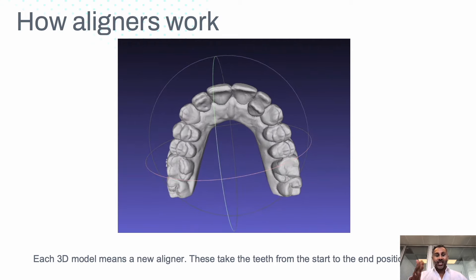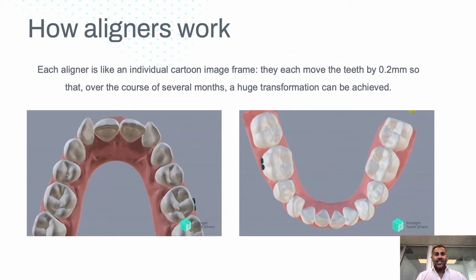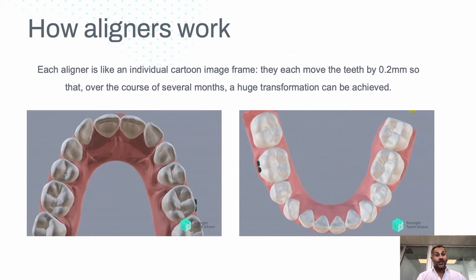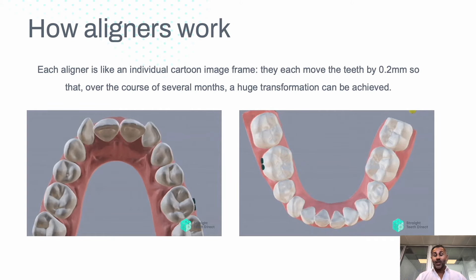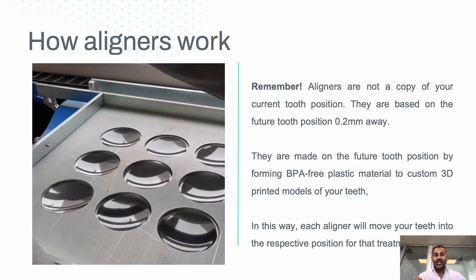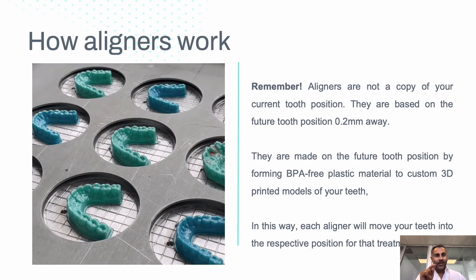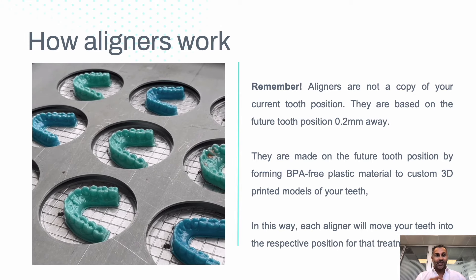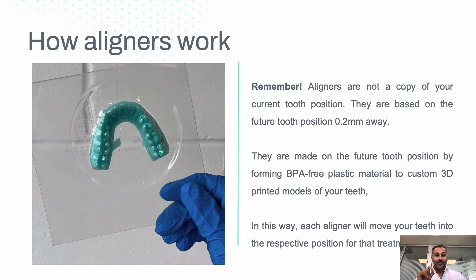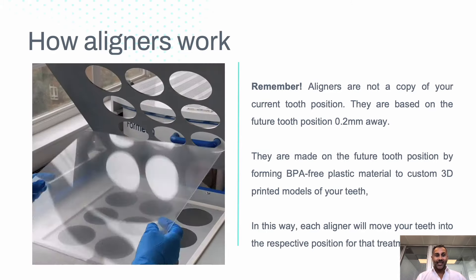Step by step, each aligner moves the teeth to take us from the beginning to the end. Each aligner is just like an individual cartoon image — they move the teeth about 0.2 millimeters, and over the course of several months huge transformations can be achieved. Each aligner is not a copy of your current tooth position; even though it fits, it's made on the future position — about 0.2 millimeters away — and by doing this it helps guide the tooth into the new place.